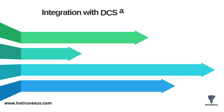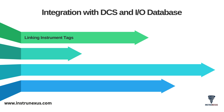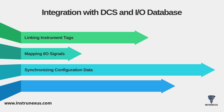The instrument index and the I/O list are two halves of the same brain. A key task is the integration with the DCS and I/O database. The instrument index contains all instruments, and the I/O list filters that list for only the instruments that connect to the control system. This integration involves linking the instrument tags from the index to the I/O list and mapping the I/O signals for those tags. This allows you to synchronize configuration data between the two documents, streamlining commissioning because the path from field device to operator screen is clear and verifiable.